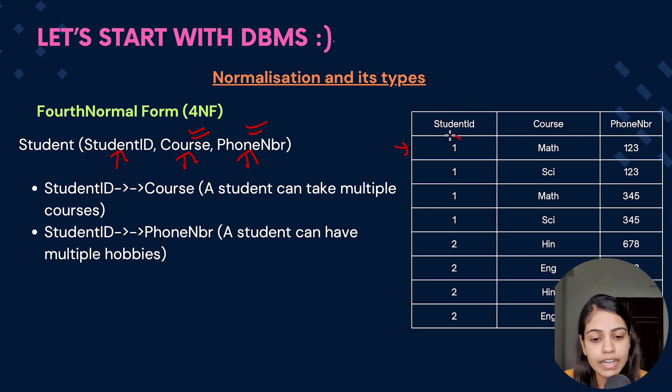So here you can see that StudentID is 1, but the course he has taken is Maths and the phone number is 123. Again StudentID is 1, the course he has taken is Science and the phone number is 123. Now again coming to StudentID 1, the course he has taken is Maths, but now the phone number is 345. So we can say for StudentID 1, the courses are Maths and Science and the phone numbers are 123 and 345.